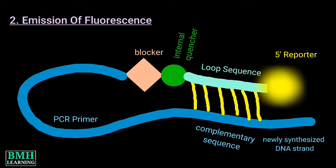Now that the reporter is no longer in close proximity to the quencher, fluorescence emission may take place. The fluorescent signal is detected by the qPCR instrument and is directly proportional to the amount of target DNA.